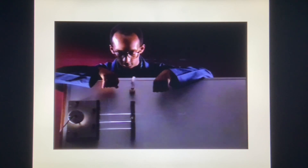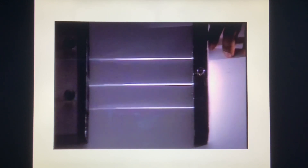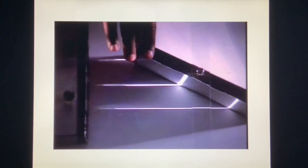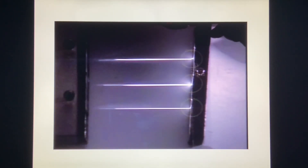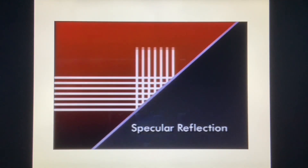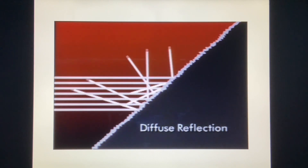We'll use these light beams and a mirror to show two different types of reflection. This side of the mirror reflects all parts of the beams at the same angle, and we still have a beam — this is known as specular reflection. The other side of the mirror is covered with a sheet of white paper. If we put that side in the light beams, the light is reflected in many directions and we no longer have a beam — this is known as diffuse reflection.